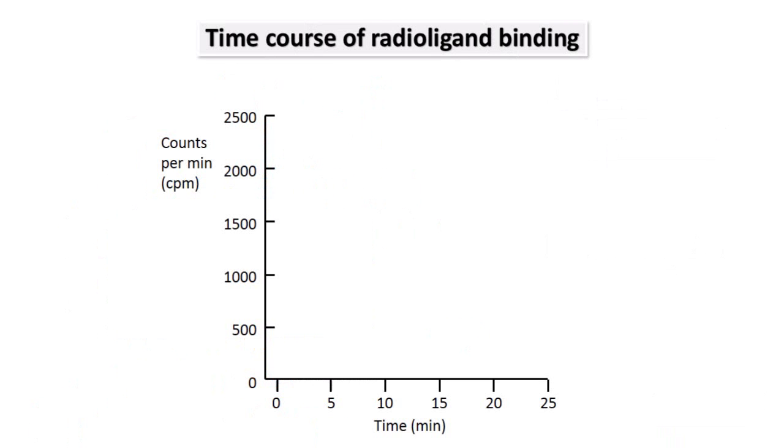The results of such an experiment are then plotted. The time after adding the hot ligand is plotted on the x-axis, and the radioactivity measured from the tissue containing the receptors is on the y-axis. The measurements made at each time are plotted individually. As more hot ligand binds to the receptors, the number of radioactive counts increases. This shows that over several minutes, binding gradually increases until it reaches a steady equilibrium.